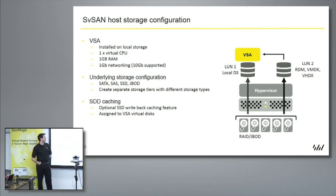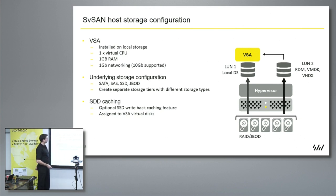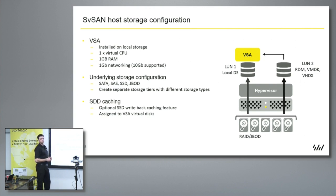The remaining space, whatever that may be, can be passed straight up to the VSA, either using raw disk mappings, disk pass-throughs, or you could create a VMFS and create a VMDK or a VHD on there. That's assigned to the VSA, and that's what it takes ownership of — and then it can use that to present out as an iSCSI target.